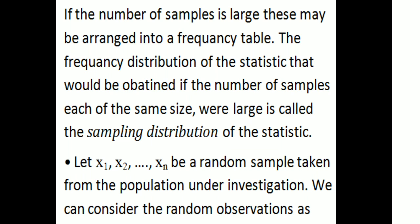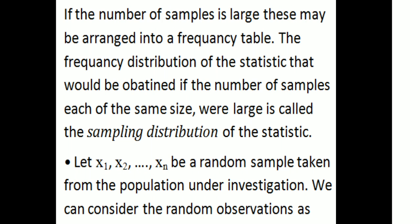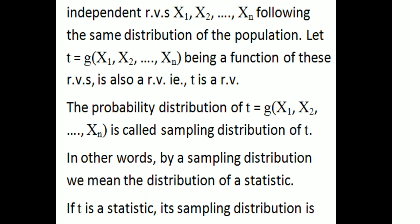In a written definition: let x1, x2, etc., xn be a random sample taken from the population under investigation. We consider the random observations as independent random variables X1, X2, etc., Xn, following the same distribution as the population. A function of these random variables is also a random variable. The probability distribution of t = g(X1, X2, ..., Xn) is called the sampling distribution of t.